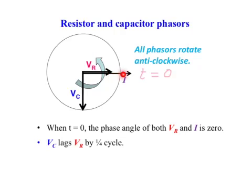This is the current phasor, which is always in this position at time equal to zero, same with the resistor voltage, always in phase with the current phasor. And the capacitor voltage is always lagging behind the resistor voltage by a quarter of a cycle.